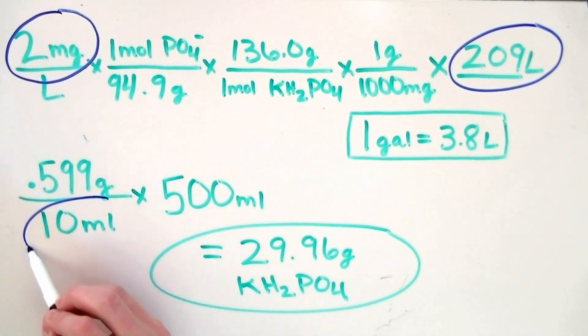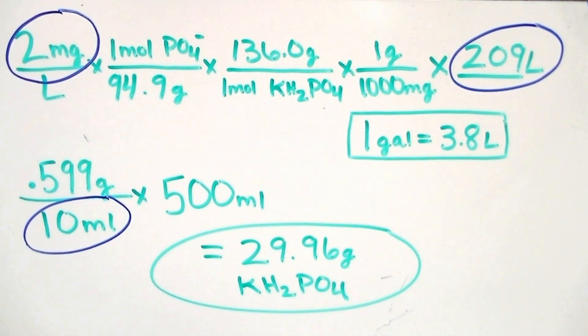We can also change the volume of each dose. We chose 10 mils because we're using a 20 mil syringe, and because this volume enabled us to stay under the solubility max of our fertilizer. Going over this solubility max would prevent us from dissolving all our phosphate into solution, and thus reduce the concentration of each dose.